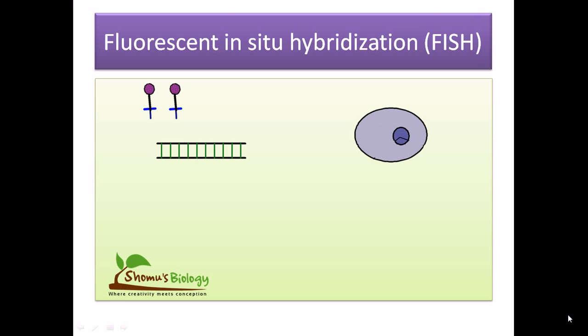Now when you talk about probe, the probe can be of different types. It can be locus specific probe, centromeric repeat probes, or whole chromosome probes. The first process for Fluorescent In-Situ Hybridization is the making of the probe.